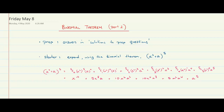Just a couple of things I'll point out in my solution. I'm going through and using this notation all the way through — 5C0, 5C1. I know 5C0 is 1, and a to the 0 is 1, I don't need to write it, but I'm writing every single term out just to demonstrate. There's not a lot to be gained by taking shortcuts generally, apart from maybe in an exam when you're pushed for time.